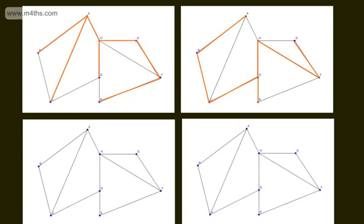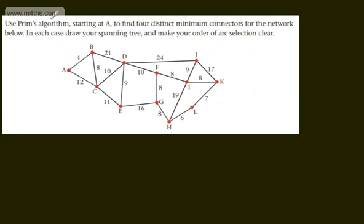What we're now going to do is look at applying Prim's algorithm. The question says: use Prim's algorithm starting at A to find four distinct minimum connectors for the network below. In each case, draw your spanning tree and make your order of arc selection clear. We can see there are four distinct minimum connectors from this network, which goes back to the idea that minimum spanning trees are not necessarily unique. We're told to start at A. The first key point of the algorithm is that we can start at any node or vertex.